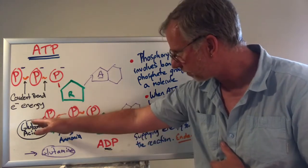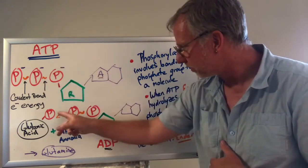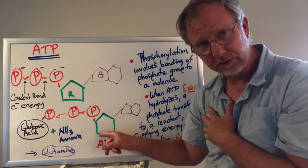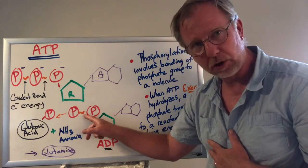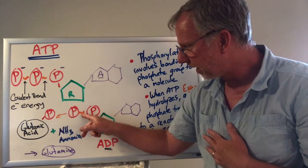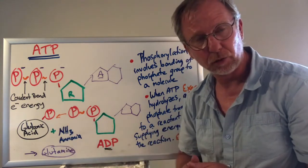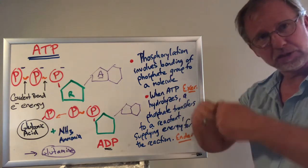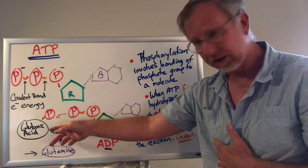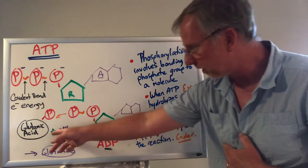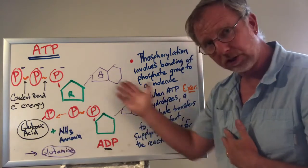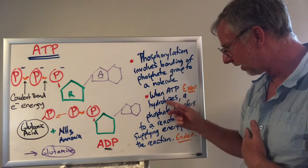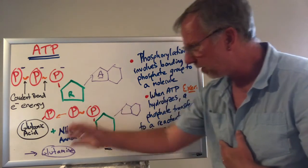When that phosphate group comes off, we no longer have ATP — we now have ADP, adenosine diphosphate. There's still energy in the remaining covalent bond, though not as much, and that bond can also break to supply energy for another endergonic reaction. This hydrolysis of ATP — when ATP splits apart — is exergonic and releases energy. That released energy powers an endergonic reaction, and this process is called energy coupling.